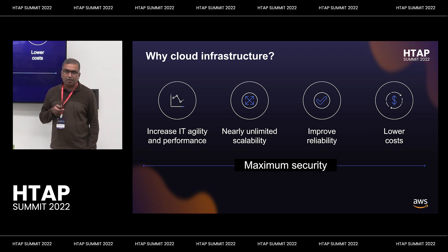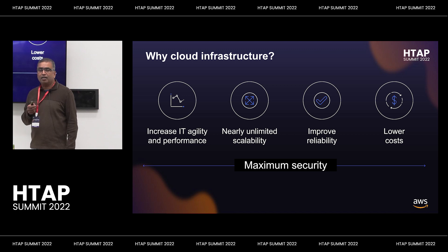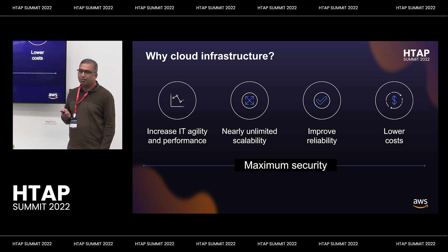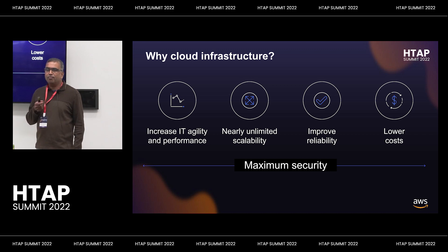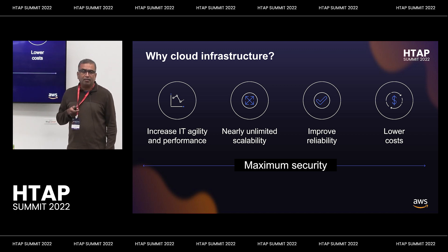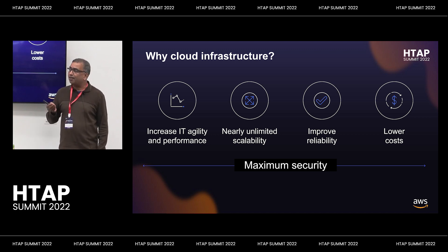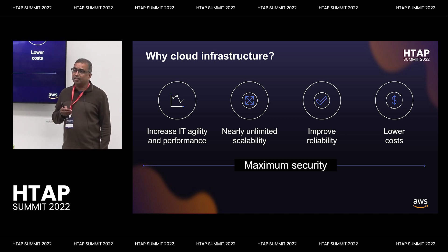We'll go over what cloud computing is and why AWS cloud. Organizations would like to make use of cloud infrastructure because it provides IT agility and performance, unlimited scalability and reliability, and also reduces cost. When organizations were looking at how to use their valuable software resources, they would like them to focus more on developing business applications — to give better user experience and improve their bottom line — rather than using those resources for managing cloud computing and cloud infrastructure. That's the reason organizations are moving towards cloud computing. But when they make the decision, they look at which cloud providers are going to safeguard their IT assets and infrastructure.